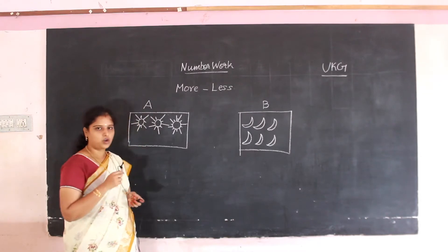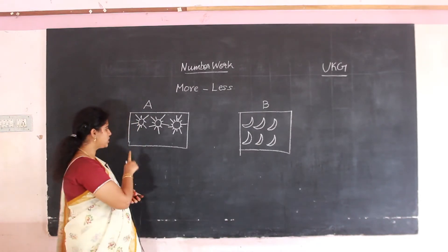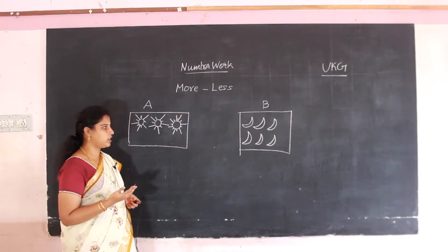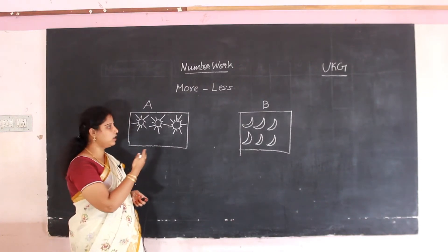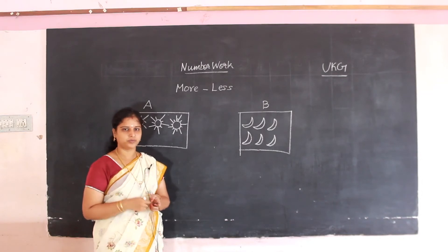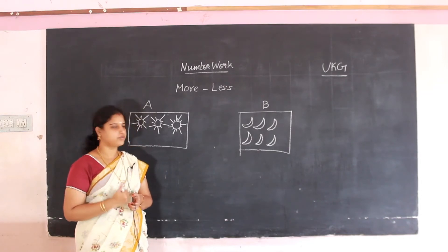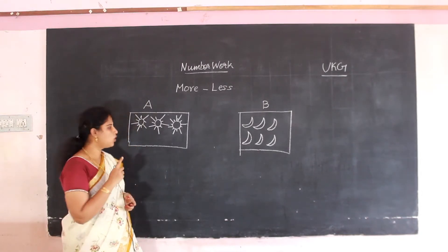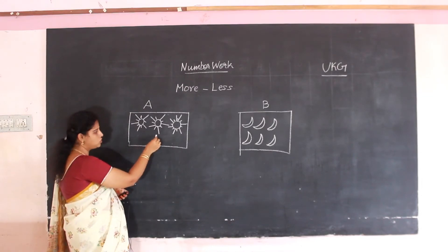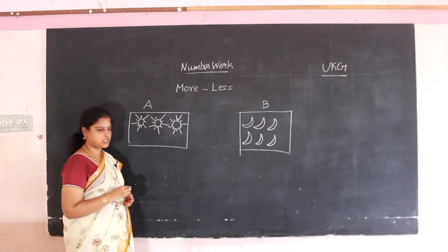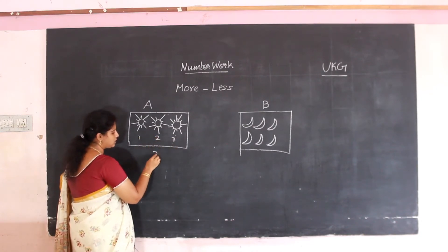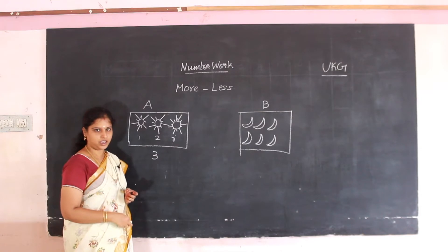Now we are going to find which is more in numbers. In quantity, which box will be more — box A or box B? How can we find? Count the numbers! Count it: 1, 2, 3. In box A, we have 1, 2, 3 — so 3 suns are in box A.